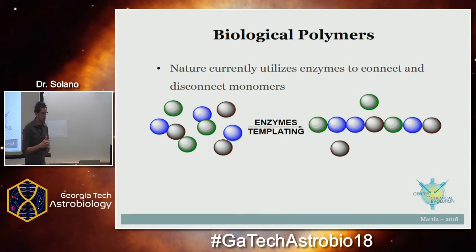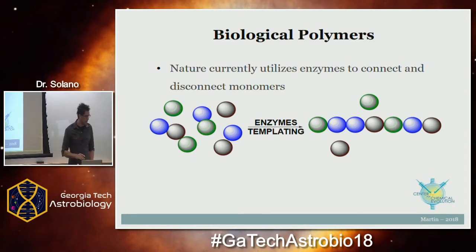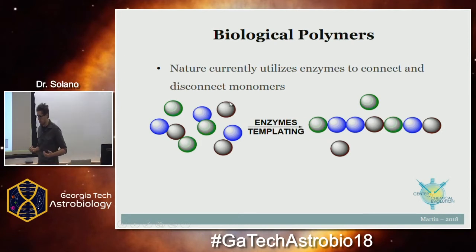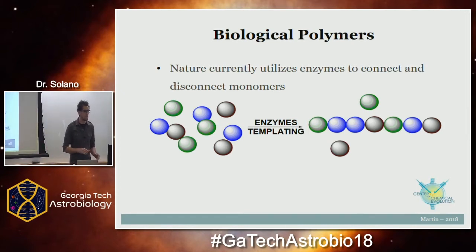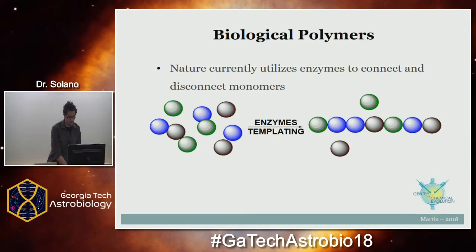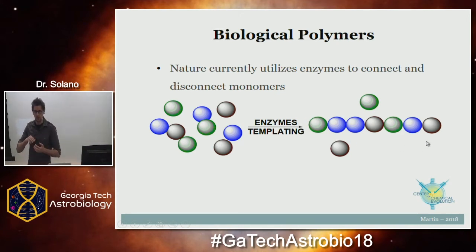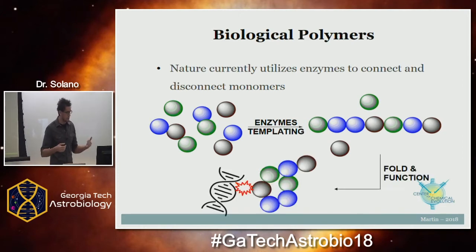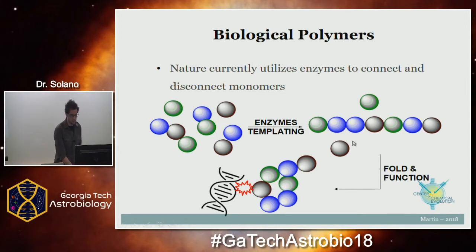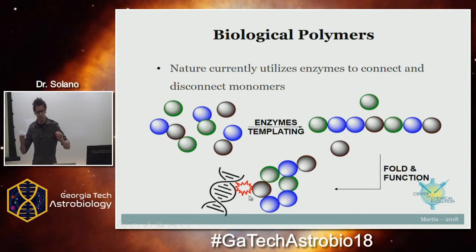As you heard in the first talk today by our Nobel laureate, you can make biopolymers. In this diagram, any kind of monomer you want to imagine — biology today and nature as we know it takes these monomers and assembles them, stitches them together into some type of polymer. Importantly, nature stitches these in a very specific order, and once stitched together in a specific order, they fold or function in some catalytic way — for example, a binding or stabilizing interaction.